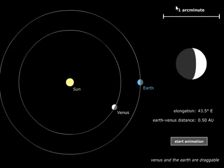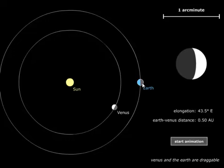In the Copernican system, here's how it looks different. We have the Sun at the center. Venus orbits the Sun and Earth orbits as well. Now, let's see how this would be different. Venus could never be on the other side of the Earth, so you'd ask: could we ever see a gibbous phase or a full Venus?